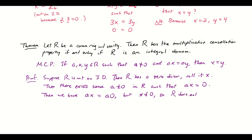We have a times x equals a times zero, because anything times zero is zero in a ring. So if a times x equals a times zero but x is not equal to zero — being a zero divisor means you are non-zero — this is a situation where a cannot be cancelled. So R fails the multiplicative cancellation property. This is the contrapositive direction: if R has the multiplicative cancellation property, then R must be an integral domain.